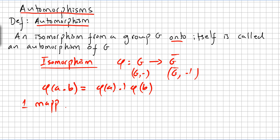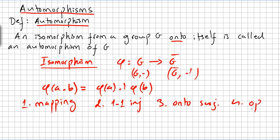For an isomorphism, the mapping has to be injective (one-to-one), it has to be onto (surjective), and it has to be operation-preserving. So an isomorphism from a group G onto itself is what we call an automorphism.